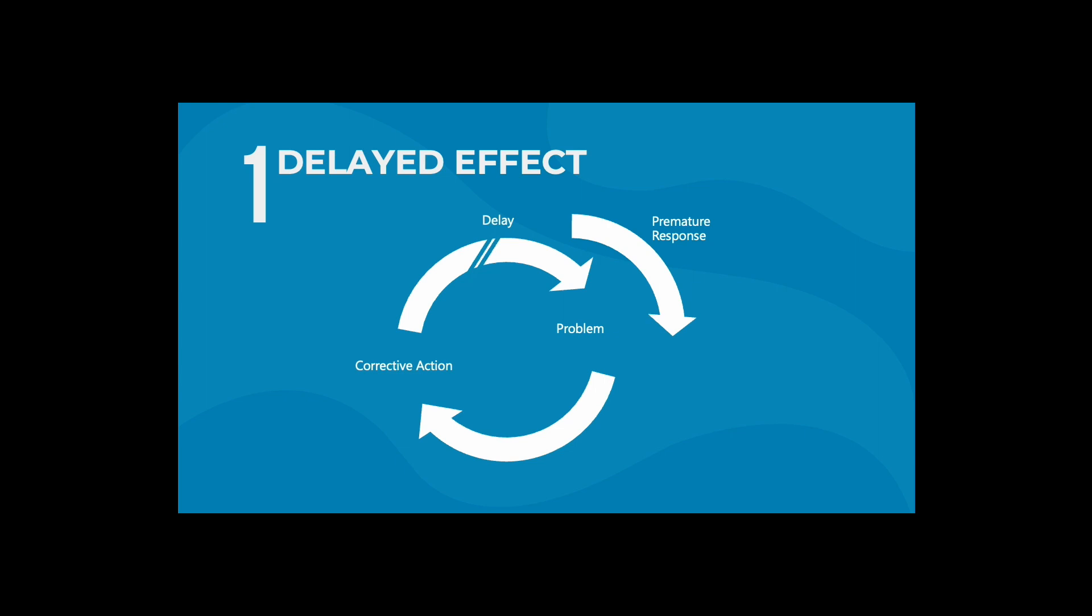The first one is called delayed effect. According to this pattern, after a correction in action, there is always a delay period before the effects of that action become evident. As you can see in this diagram, that delay is signified by the two lines that intersect the arrow on the top. If this delay is not fully taken into account, we can overemphasize by taking further action before the effects of the previous action have had time to do their work.